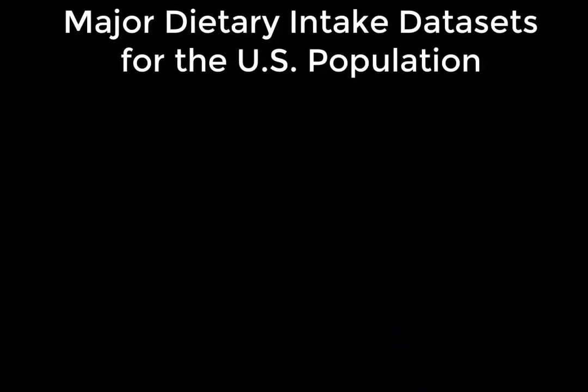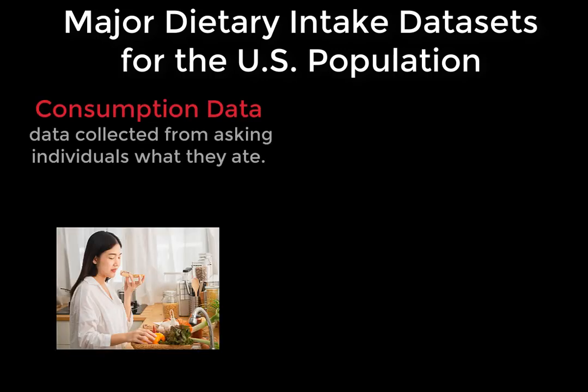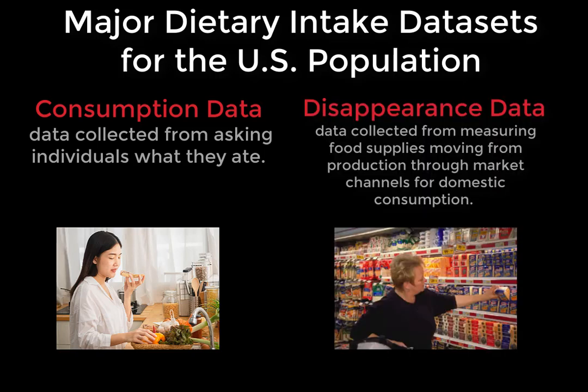We are going to review and use two major dietary intake data sets for the U.S. population. The terminology around this is not always consistent between all of the websites we're going to visit, but I'm going to define and use two terms in distinct ways for this class. The first is consumption data — data collected by asking individuals what they ate, what they consumed. This will be compared to disappearance data, which is data collected by measuring food supplies moving from production through market channels for domestic consumption. It disappears into the commercial and retail food marketplace. It is a popular proxy for actual food consumption, but it does not directly measure what food is eaten.